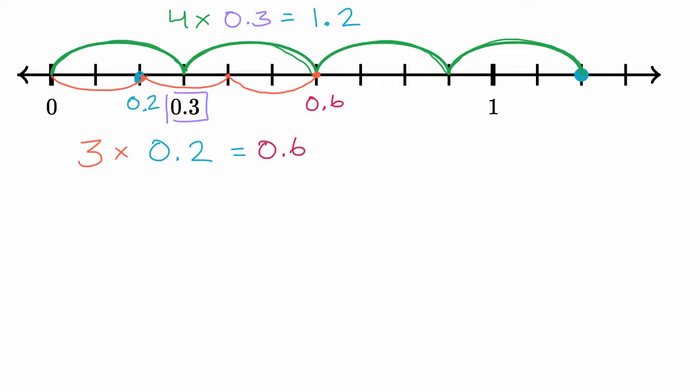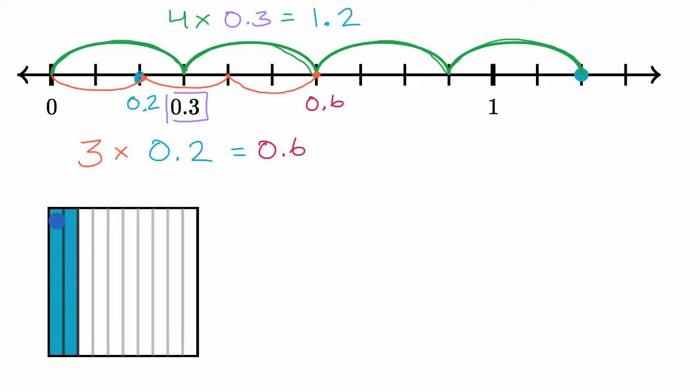Now you can also visualize 2 tenths as parts of a whole. So for example, this represents 2 tenths. I have this whole, this square is a whole. It's split into 10 equal columns here, and we have two of them filled in. So this represents 2 tenths.